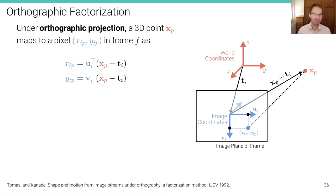How does this work? Well, under orthographic projection, a 3D point maps to a pixel in frame i in the following way.